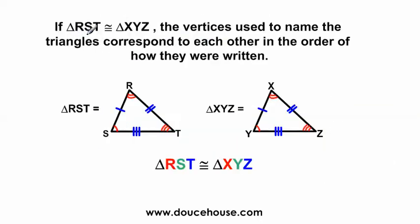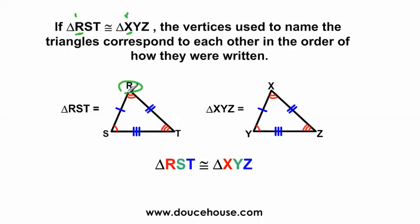Moving on — it says if triangle RST is congruent to triangle XYZ, the vertices used to name the triangles correspond to each other in the order they are written. Each letter indicates a vertex, or one of the corners of the triangle. I have R, S, and T here, and over here I have X, Y, and Z. R comes first here and X comes first here, so these two vertices are equal to each other. I have two arcs at vertex R and two arcs at vertex X, so these two vertices are congruent to each other.